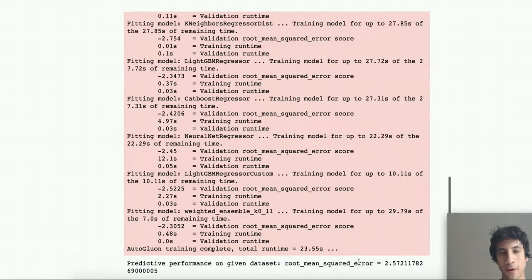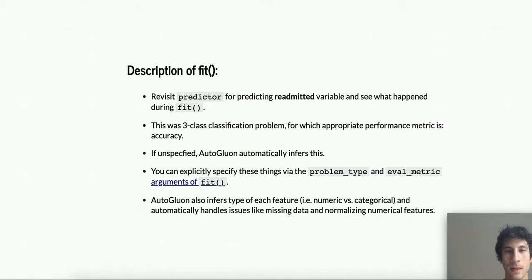And here, finally, it prints out the resulting performance of the default evaluation metric on the test data, which is root mean squared error, and in this case, it's 2.5. Note that some of these internal metrics printed by AutoGluon are actually negative, because internally, AutoGluon is always assuming higher metric values equals better performance, so it flips metrics that are actually losses, like root mean squared error, to be negative internally. Now let's go back to the original predictor for our three-class multi-class classification problem for predicting the readmitted variable and see what actually happened during fit. So this was a three-class problem, and the default metric AutoGluon chose was accuracy. Again, it'll just automatically guess this or infer this if you don't specify what the metric or the type of prediction problem should be.